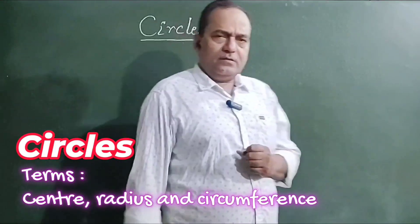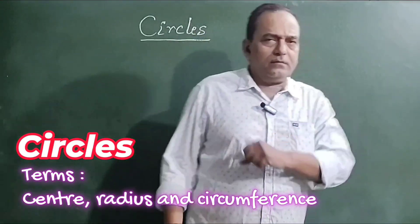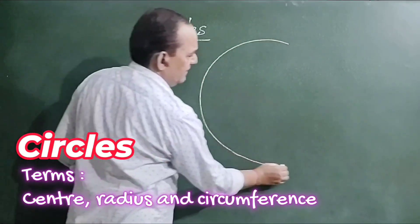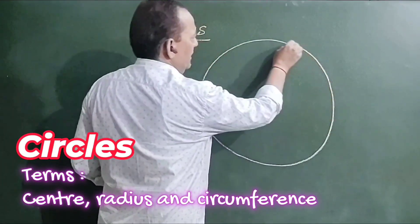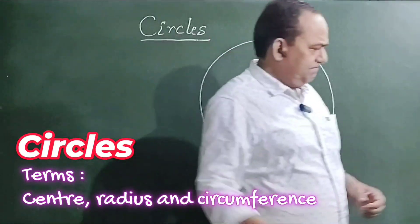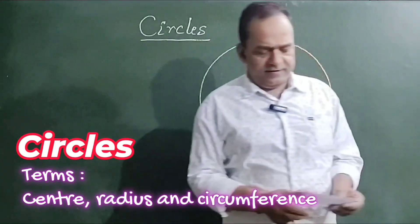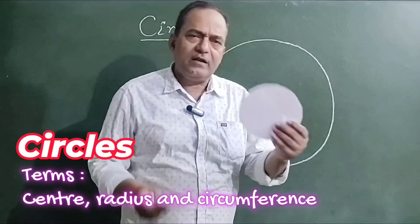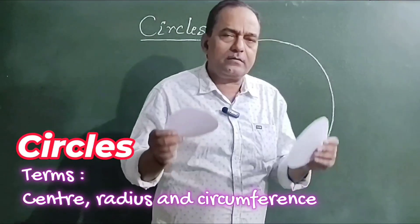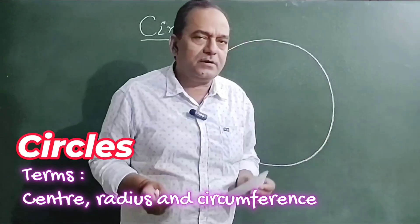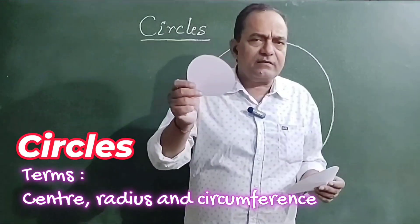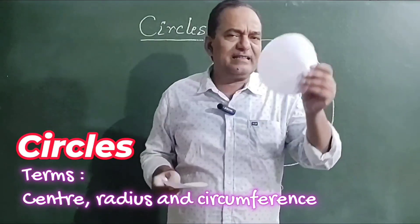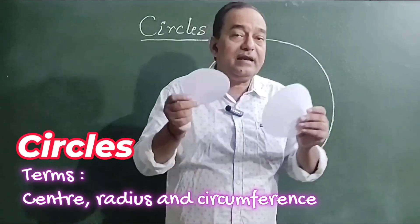Let me first draw a circle. This is a circle — a big circle. This is also a circle, but these two circles are of different sizes. The radius of this circle and the radius of this circle are different. This one is smaller and this one is larger in diameter.